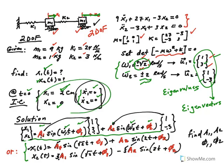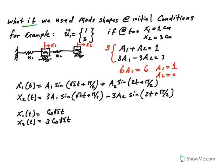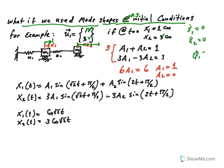Those initial conditions were arbitrary. Now I want to show you what happens if the initial condition is the mode shape itself — specifically the first mode shape. So at t = 0: x1 = 1 (move mass 1 one unit to the right) and x2 = 3 (move mass 2 three units to the right), with both initial velocities zero so φ1 = φ2 = 90° as before.